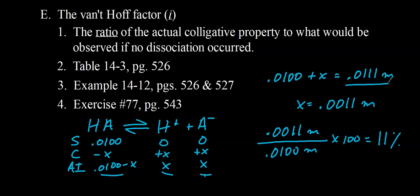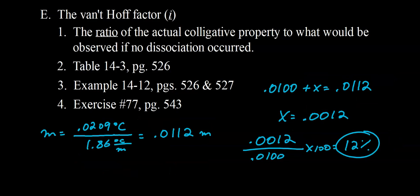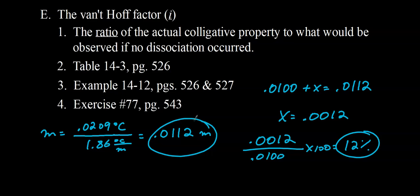Try one on your own — problem 77 on page 543, finding percent ionization. Go ahead and pause the video. The setup is the same: find the actual concentration of particles in solution first. The advertised concentration plus x equals the actual concentration of particles in solution, where x is the amount that ionizes. Taking x divided by the original concentration and multiplying by 100, we get 12% ionized.